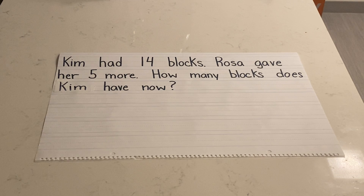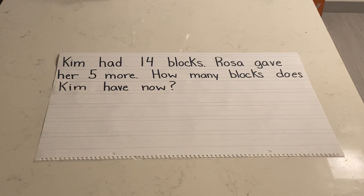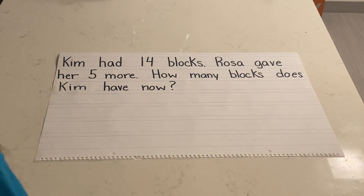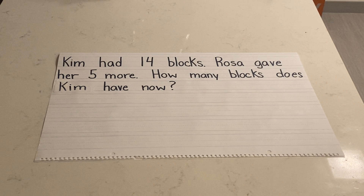In my mind, in my story, I saw two girls. One had 14 blocks — a lot of blocks — and the other gave her five more. So now that I have my visualization, now that I know what's happening in the story problem, I can write my number sentence.